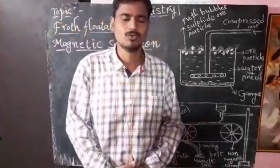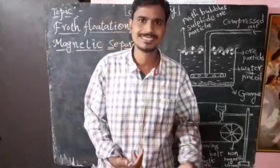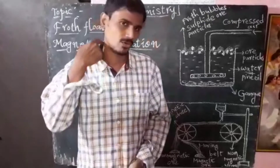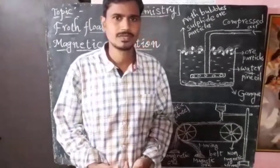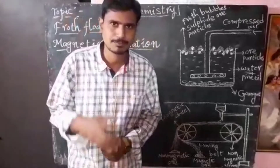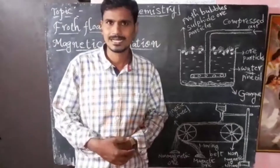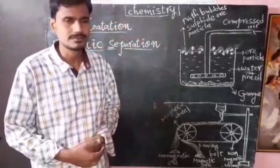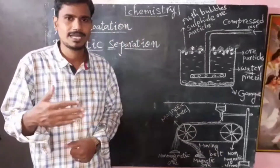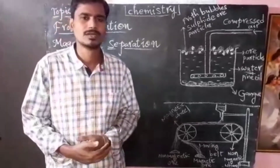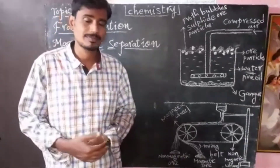Welcome to the chemistry session. In the last class we discussed some basics and principles of metallurgy — what is metallurgy, what is ore, what is mineral. Metallurgy is the process of extraction of metal from the ore. A mineral is the elements or compounds of metals available in nature in the earth's crust. Extraction of metal from a mineral without economical loss is called ore.